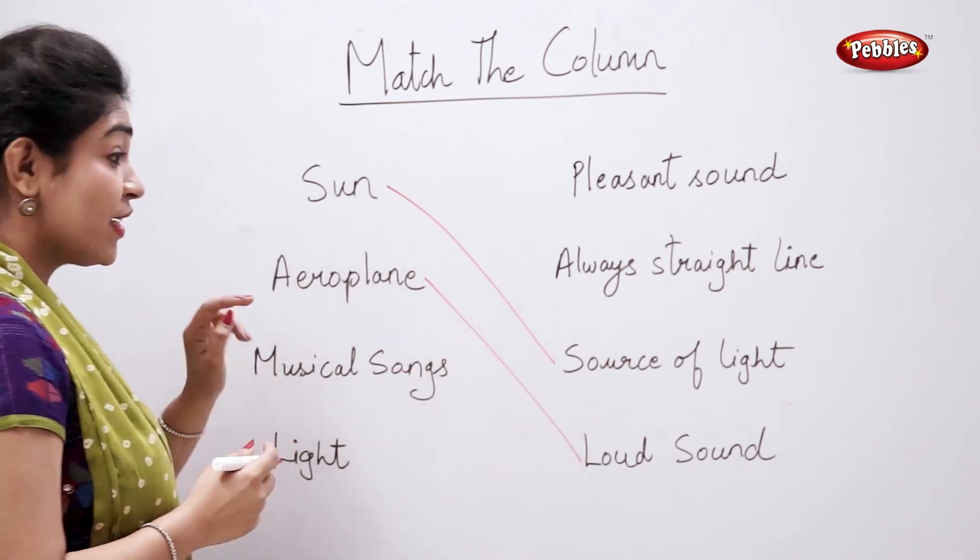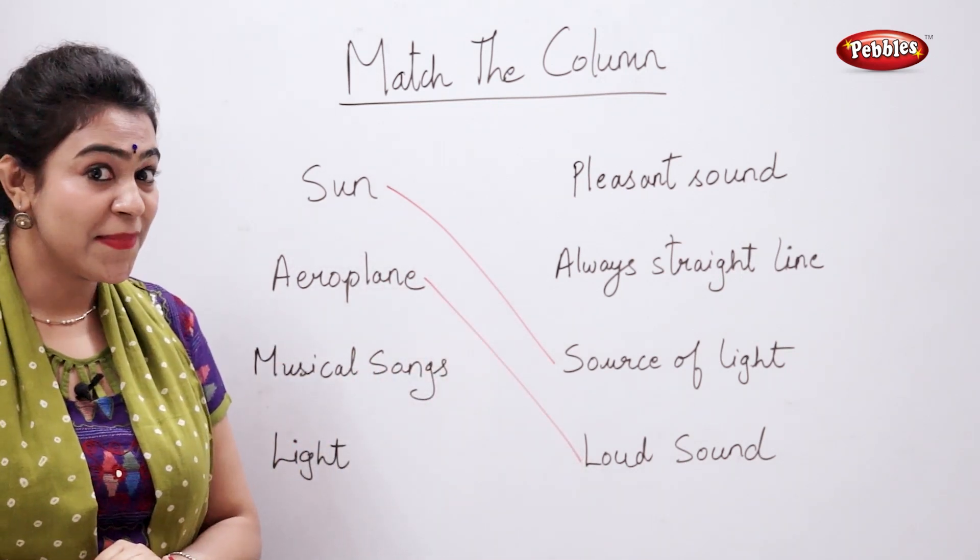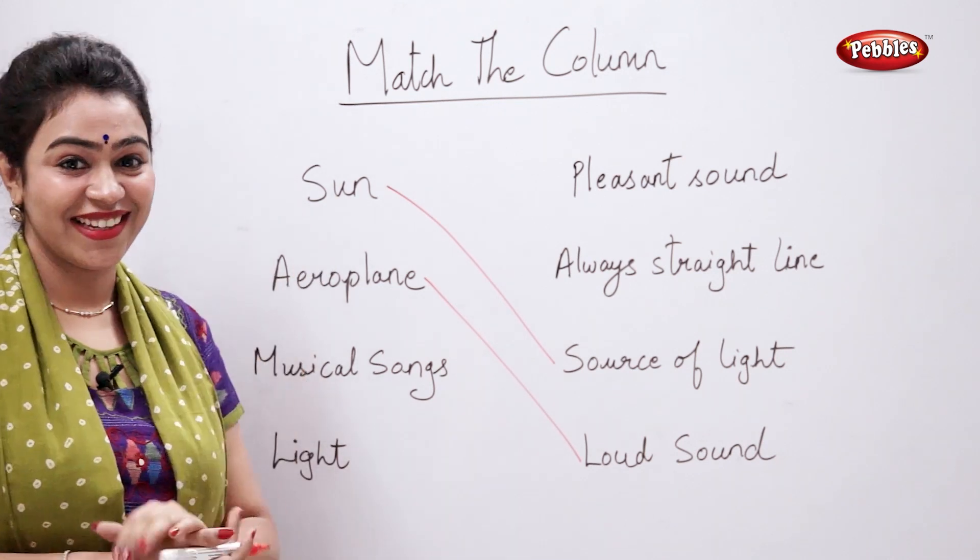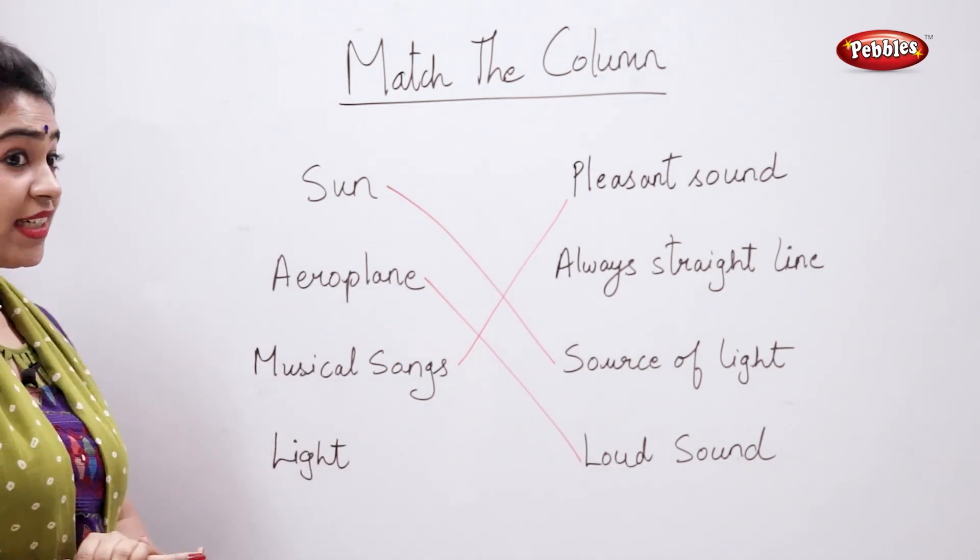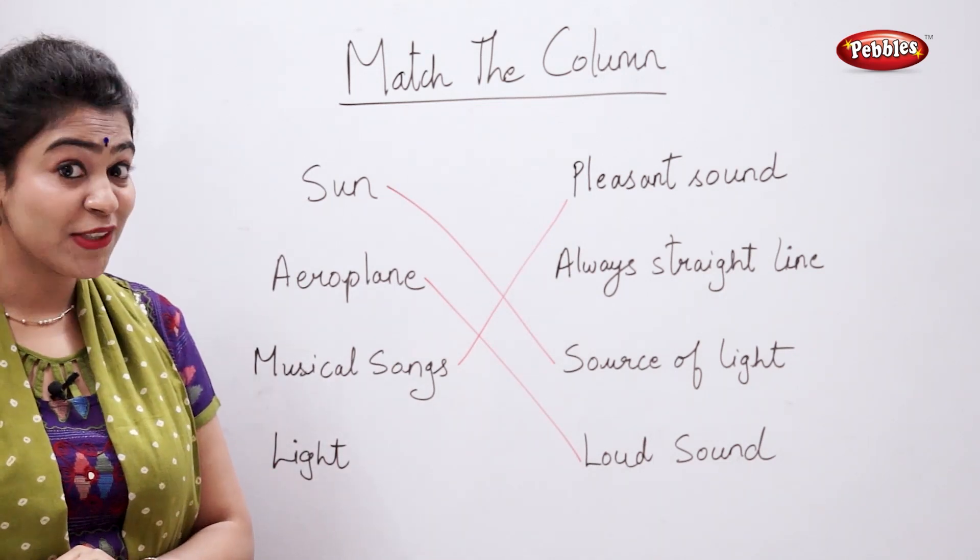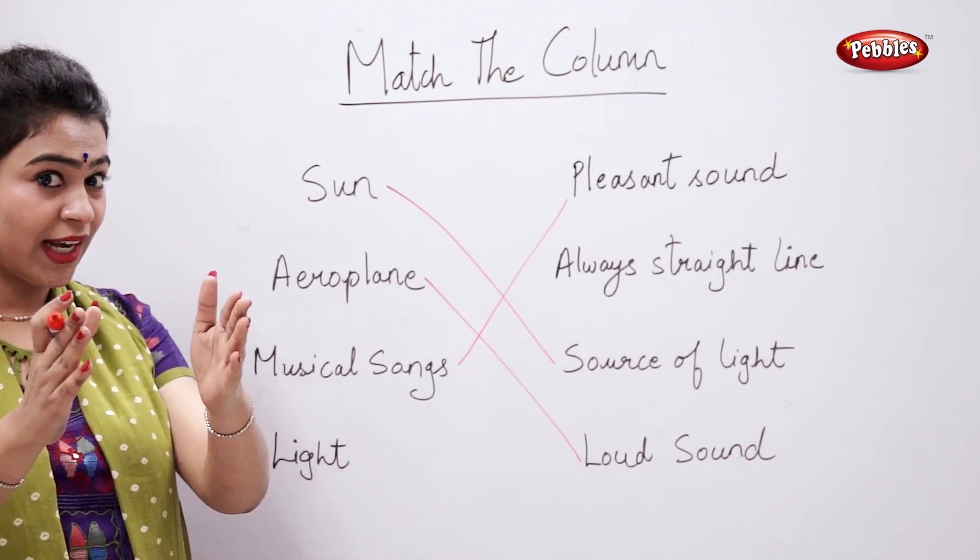Musical songs - they produce pleasant music. Light - light always travels in straight lines.